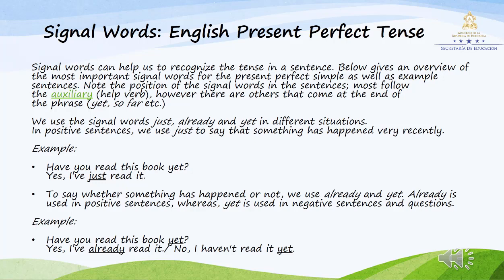Las palabras clave pueden ayudarnos a reconocer el tiempo en una oración. A continuación se ofrece una descripción general de las palabras clave más importantes para el presente perfecto, así como oraciones de ejemplo. Tenga en cuenta la posición de las palabras clave en las frases; la mayoría sigue al verbo auxiliar. Sin embargo, hay otros que vienen al final de la frase: todavía, hasta ahora, etc. Usamos las palabras clave 'simplemente,' 'ya,' y 'sin embargo' en diferentes situaciones. En oraciones positivas usamos 'solo' para decir que algo ha sucedido muy recientemente. Ejemplo: ¿Has leído ya este libro? Sí, lo acabo de leer. Para decir si ha pasado algo o no, usamos 'ya' y 'todavía.' 'Ya' se usa en oraciones positivas mientras que 'todavía' se usa en oraciones y preguntas negativas. Ejemplo: ¿Ha leído ya este libro? Sí, ya lo he leído. No, todavía no lo he leído.